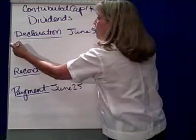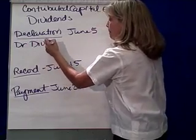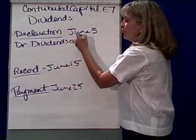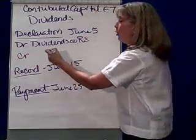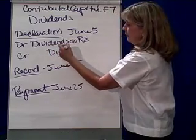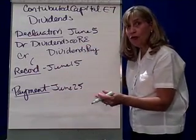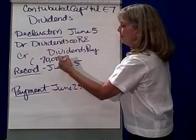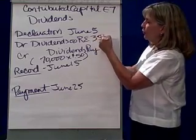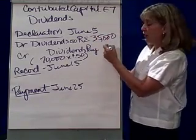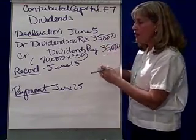On the date of declaration, we're going to debit an owner's equity account called Dividends — or we could also debit Retained Earnings — and we're going to credit a current liability account called Dividends Payable. The number of outstanding shares is 70,000 times $0.50 per share, so that's a debit to Dividends (or Retained Earnings) for $35,000 and a credit to Dividends Payable for $35,000. That's the entry on the date of declaration.